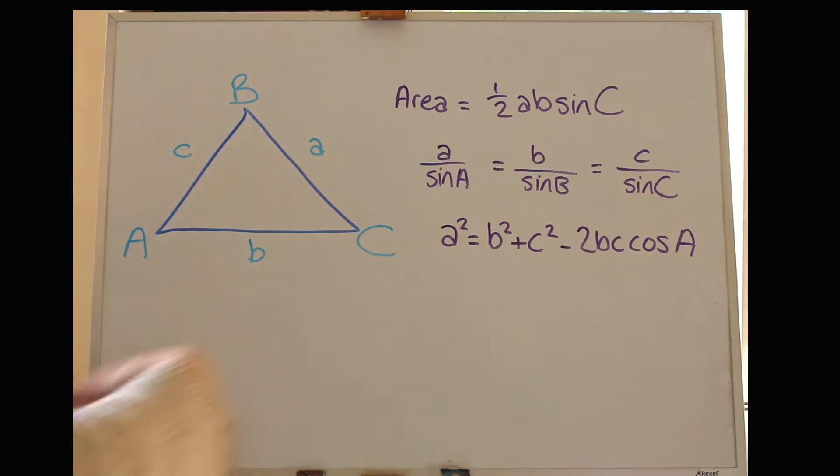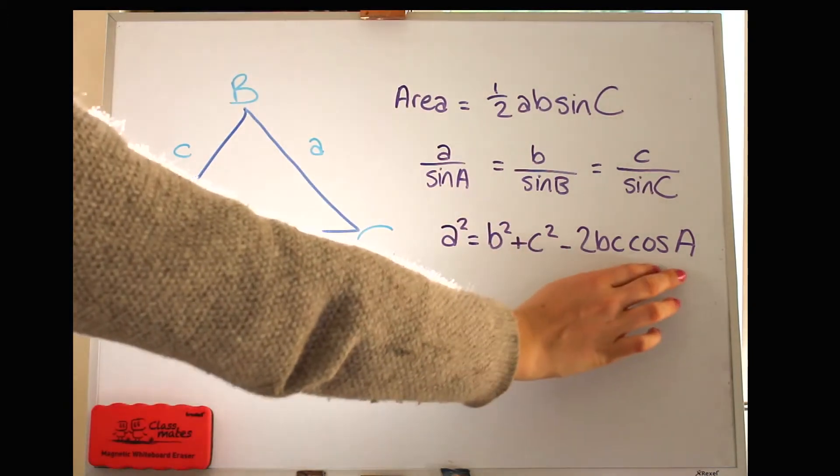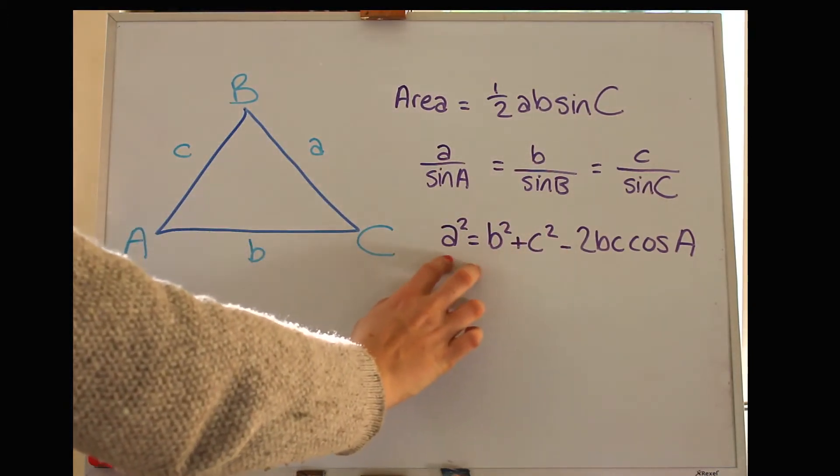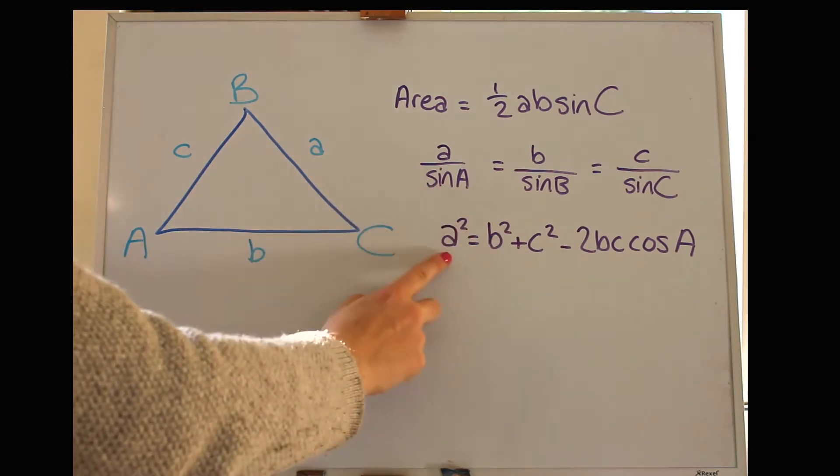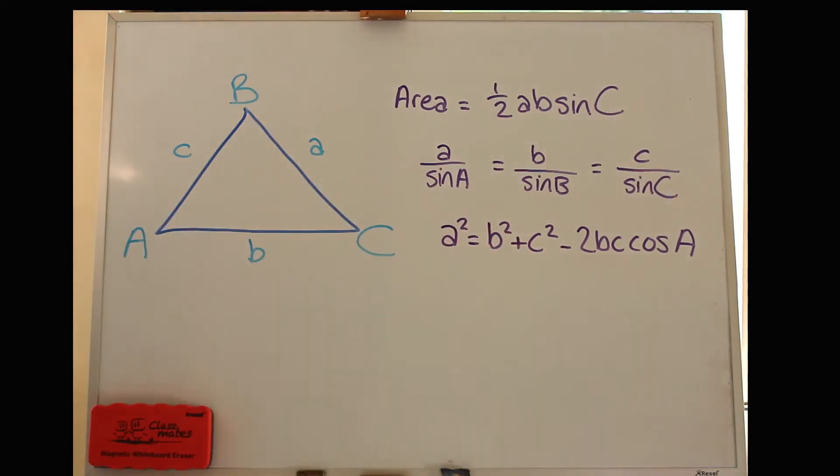And the last formula we need is the cosine rule. This is the cosine rule, so it looks slightly more complicated, I think, or just maybe harder to remember than the sine rule, but that's it there. So memorize those if you can, and we'll look at an example of how to use them.